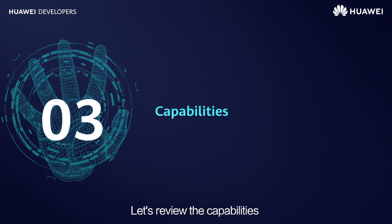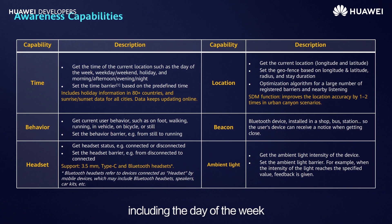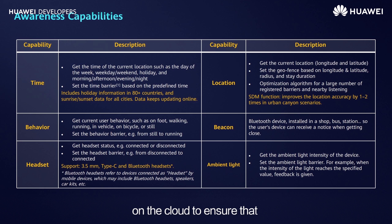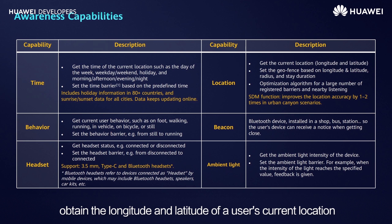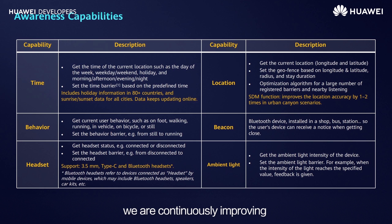Let's review the capabilities that Awareness Kit can provide. With the time capability, Awareness Kit helps you obtain the time of a user's current location, including the day of the week and whether the user is on a holiday. The time and holiday information covers most countries and regions around the world and is updated in real-time on the cloud. With the location capability, Awareness Kit helps you obtain the longitude and latitude of a user's current location. You can preset a geofence to receive a notification when conditions are met, and location accuracy is being continuously improved.